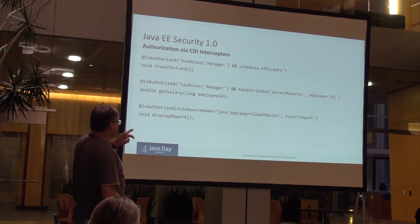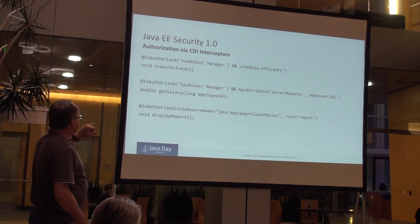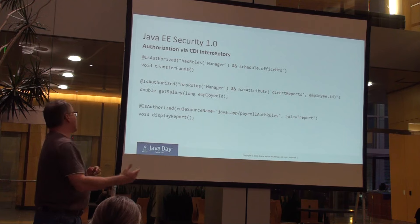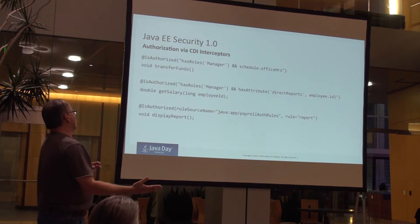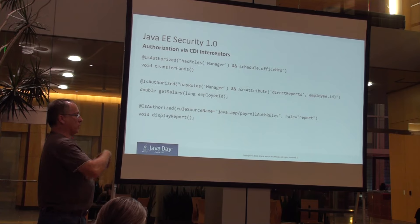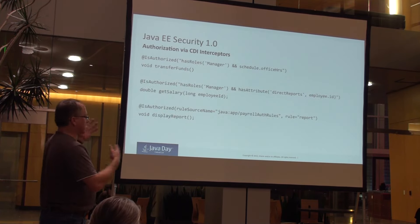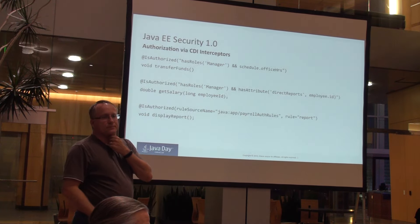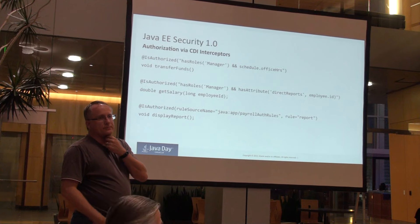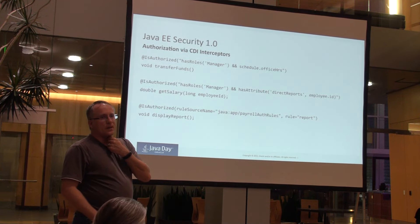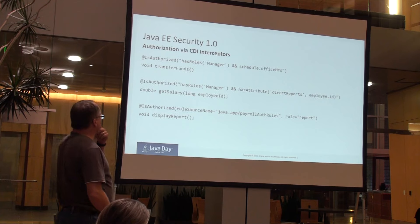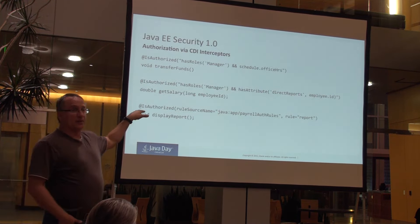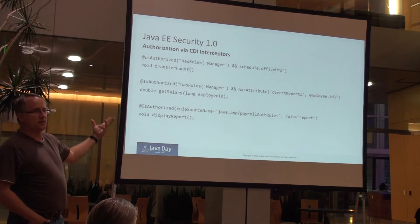Here's another example — what we're doing is reaching out to an external source that has authorization rules, and saying: give the rule, report, and apply that constraint to display report. An audience member asked if there'll be an annotation to run a custom method to figure out the constraint. Based on what we've seen, that third external-source example is probably the closest.